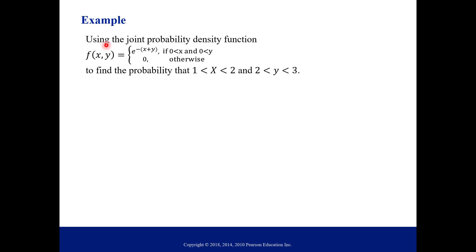So using the joint probability density function given here, so notice what this is. This is a piecewise function that says that our function is e to the negative X plus Y anytime X is positive and Y is positive. If X or Y, either one happened to be negative, then the function equals 0. So use this density function, probability density function, to find the probability that your random variable X is between 1 and 2 and your random variable Y is between 2 and 3.